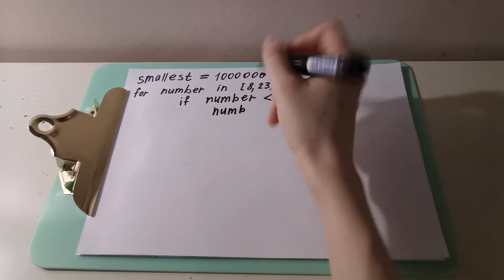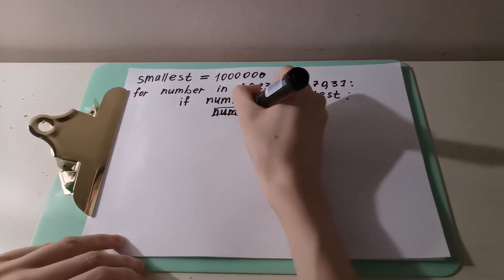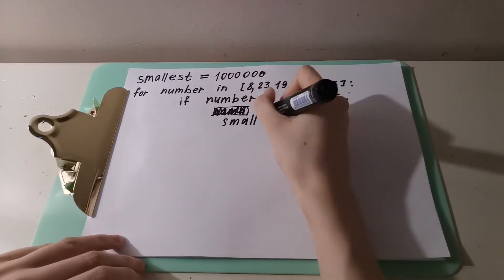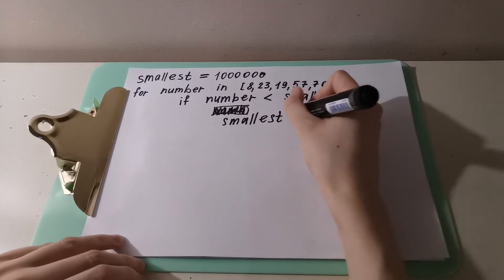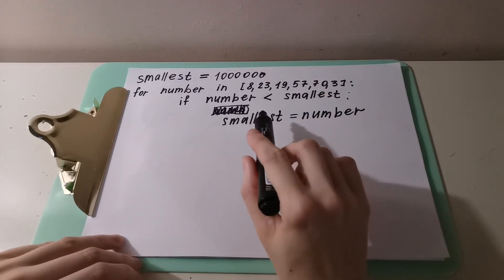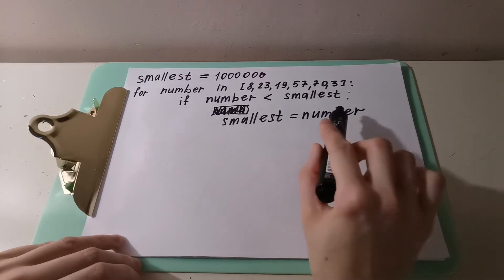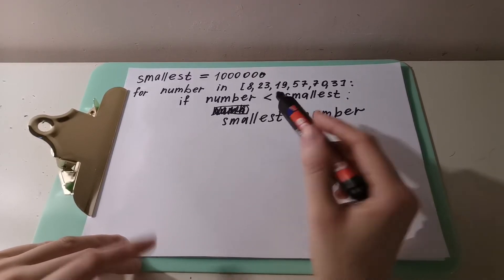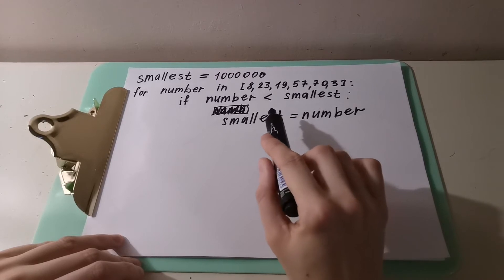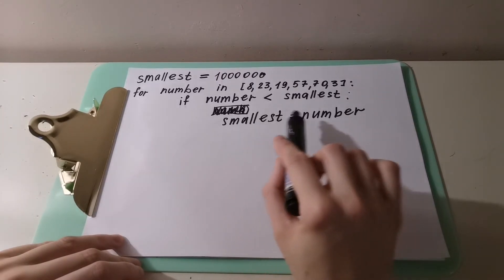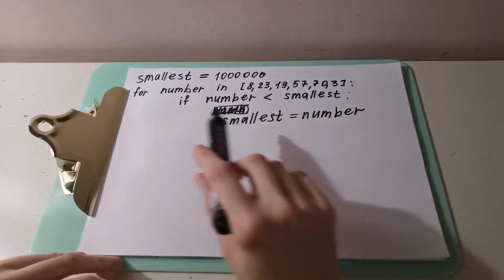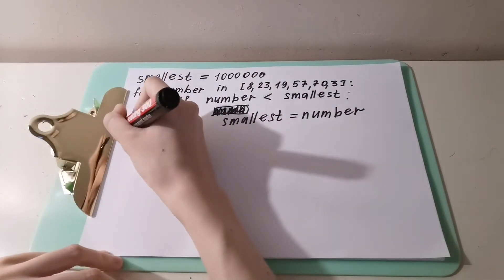The order matters here — smallest takes the value of number, not vice versa. Try writing it the other way and see the difference. So: smallest takes the value of number. Then the print line — remember, we can put it at the for level or the if level. Let's try the for level first: print smallest.